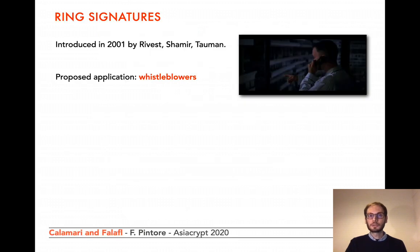Ring signatures allow a signer to produce a signature on behalf of a group of users, called a ring, and the signature hides the real identity of the signer. They were introduced in 2001 by Rivest, Shamir and Tauman, who motivated them as a means to protect whistleblowers.